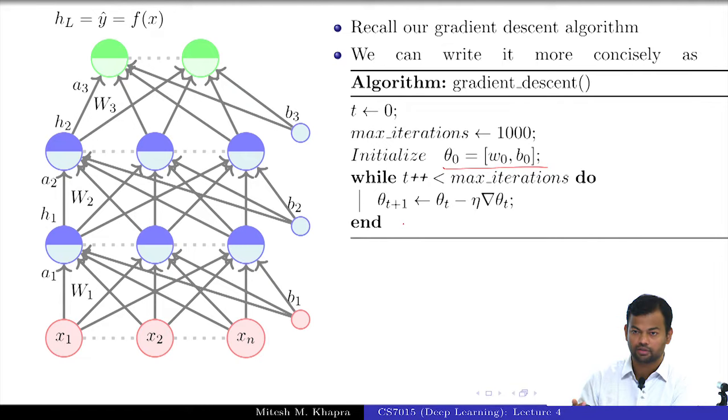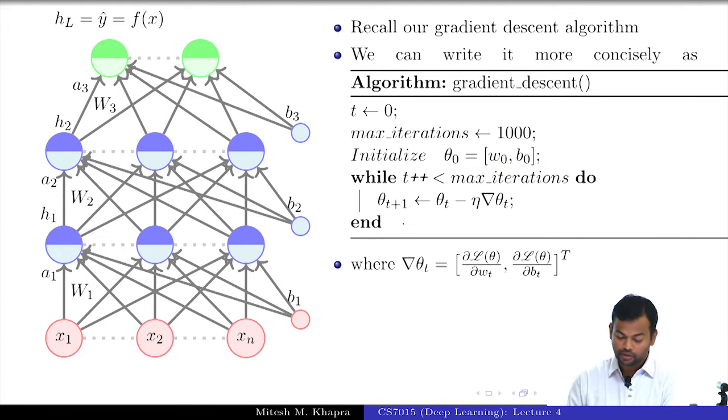You see where I am going with this? Where delta theta t—just to remind you—was the collection of all the partial derivatives with respect to all the parameters. In this toy example all was equal to 2; we just had two parameters. Now you see where I am going with this.